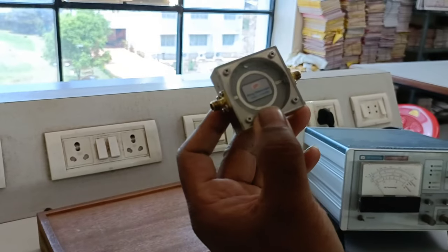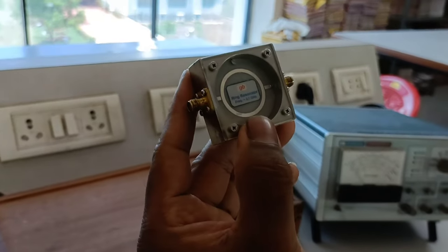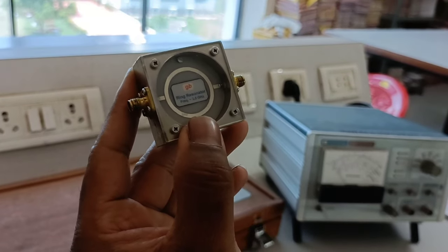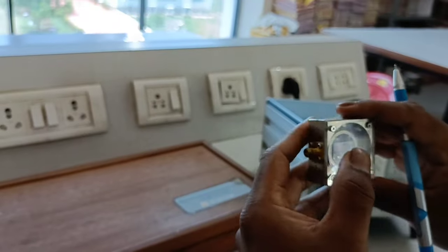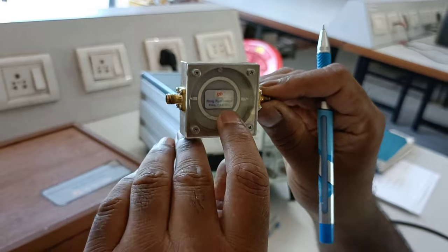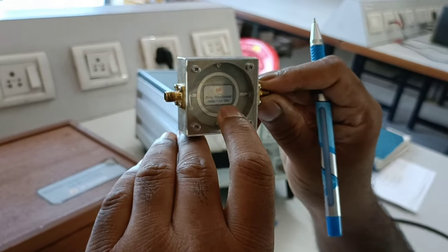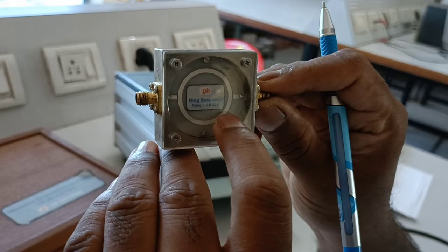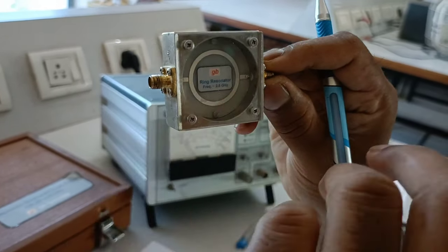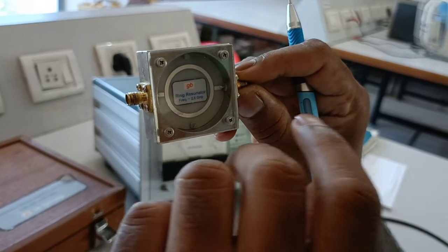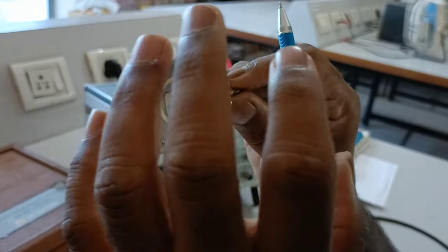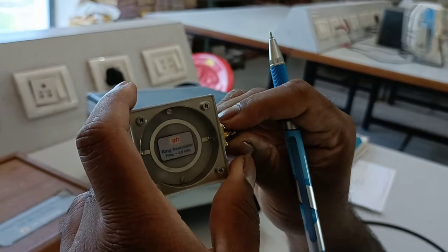So the first question is, what is ring resonator? Ring resonator is a basic MIC component. The MIC stands for Microwave Integrated Circuit Component. Here it is designed already, you can observe here, the frequency what they have mentioned is 2.5 GHz. That means the ring resonator FR, resonant frequency is 2.5 GHz. That is what we have to find out practically, whether it is really coming to that 2.5 GHz, whether it is really resonating at that point.